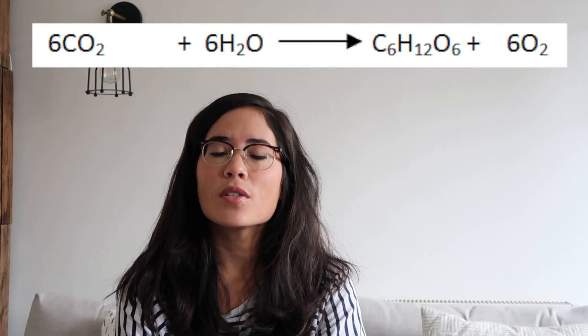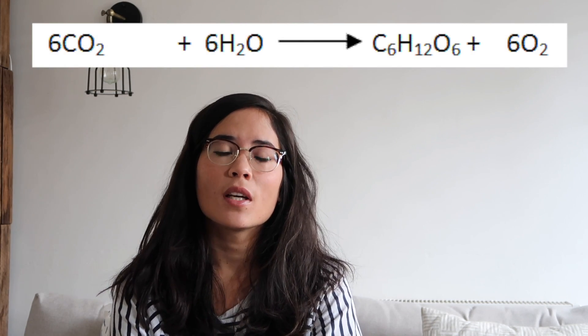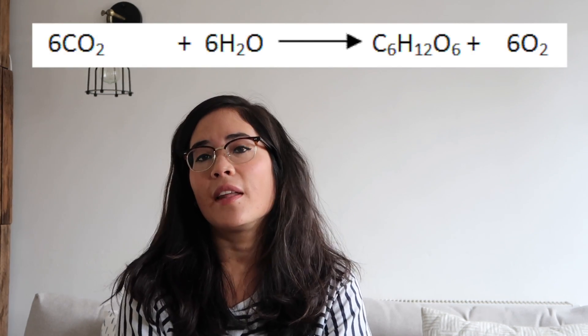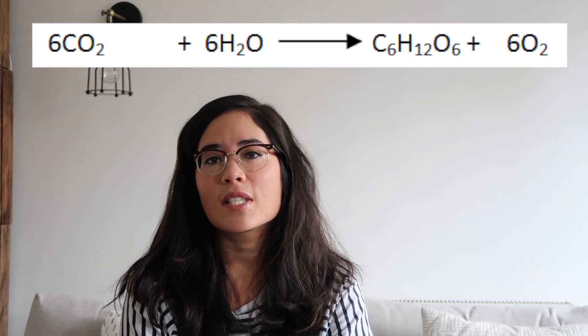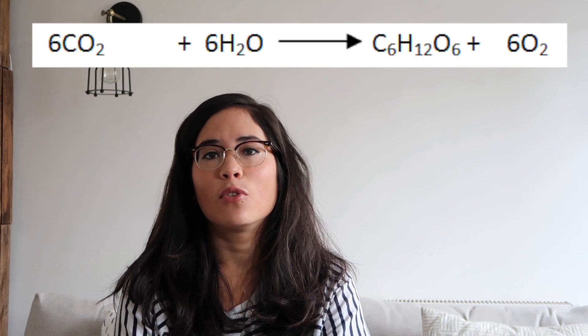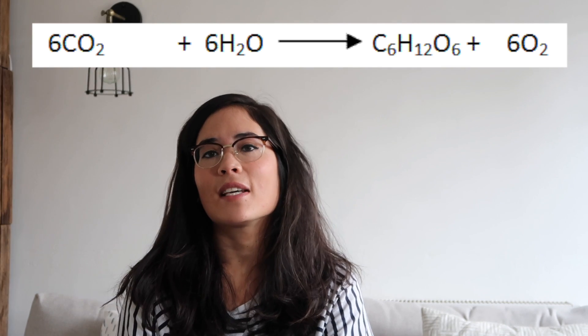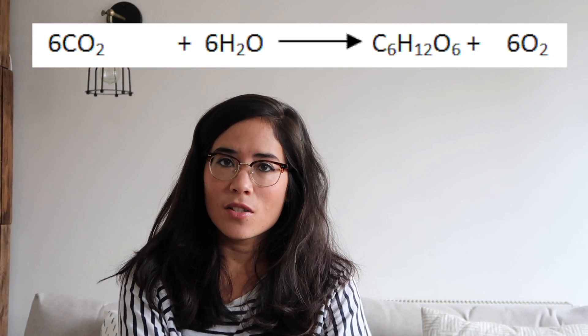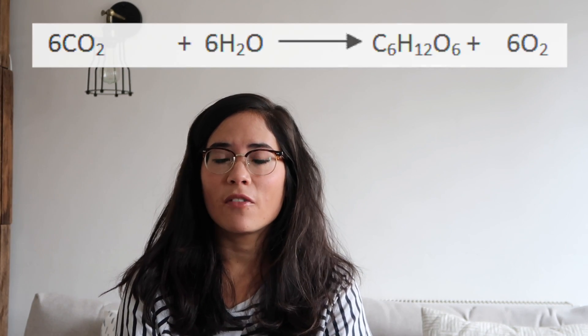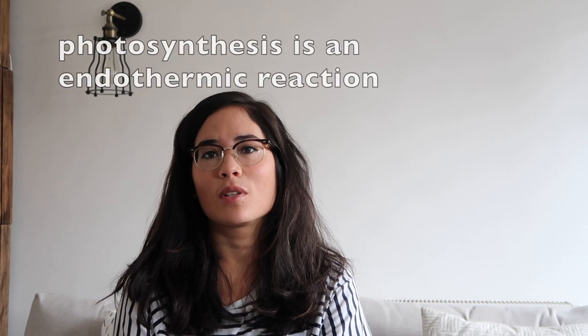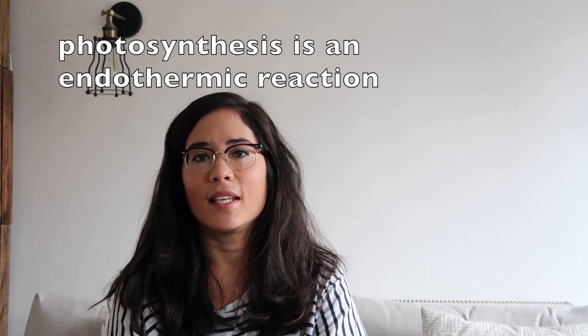If they ask you for the balanced symbol equation, remember it's sixes, sixes, sixes. So we need 6CO2 plus 6H2O, which is six waters, and that goes to C6H12O6 — the formula for glucose — plus 6O2. So if in doubt, just write a six. Remember that photosynthesis is an endothermic reaction, which means it takes in energy.